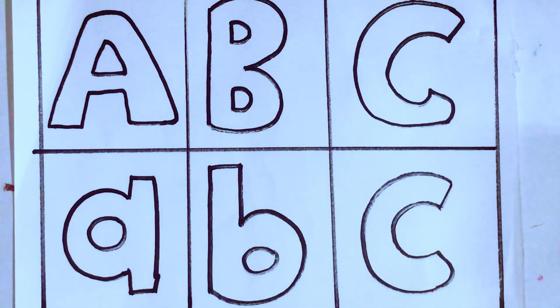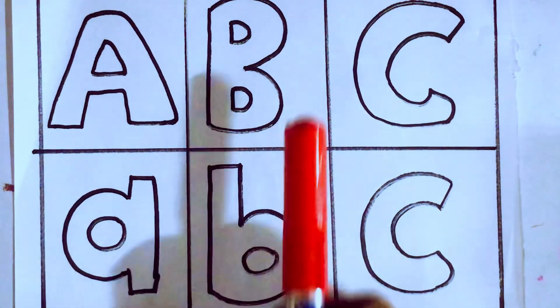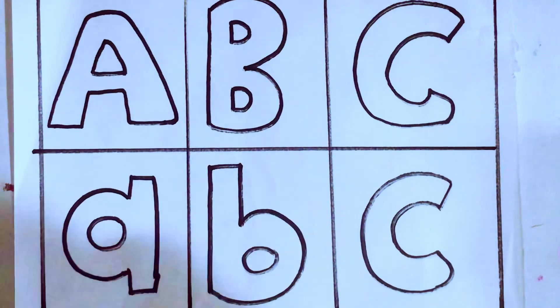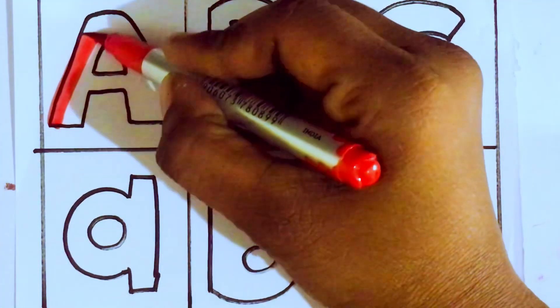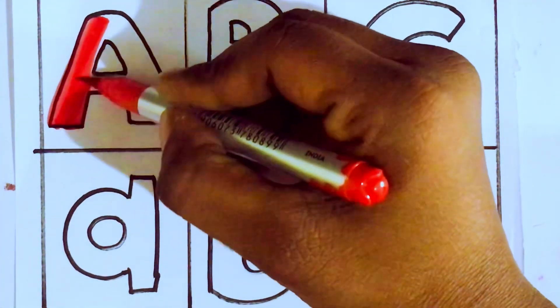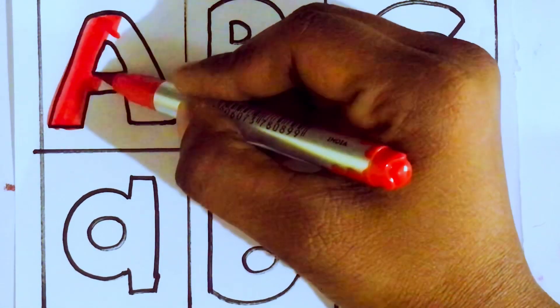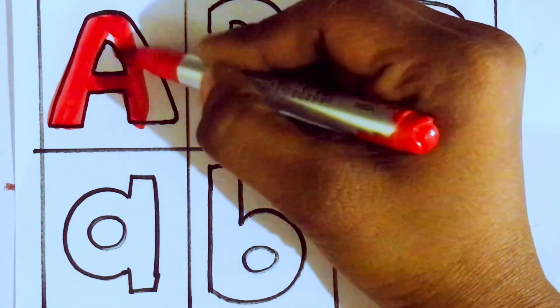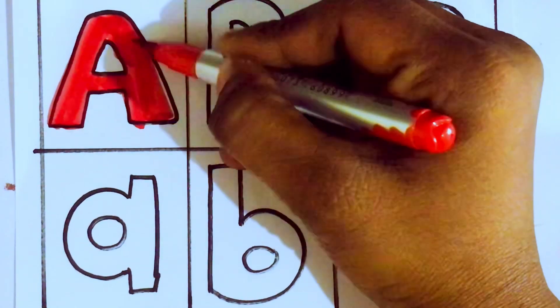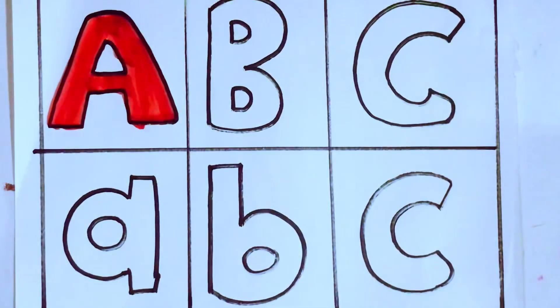Okay, let's learn the alphabets. Capital alphabets. Red color, A. Which letter kids? A. A for apple. A, P, P, L, E. Apple. Capital A.